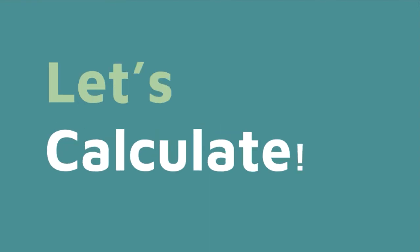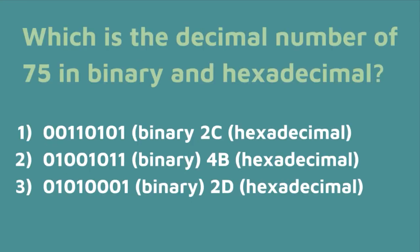Let's try to make this correlation ourselves. What is the decimal number of 75 in binary and hexadecimal?